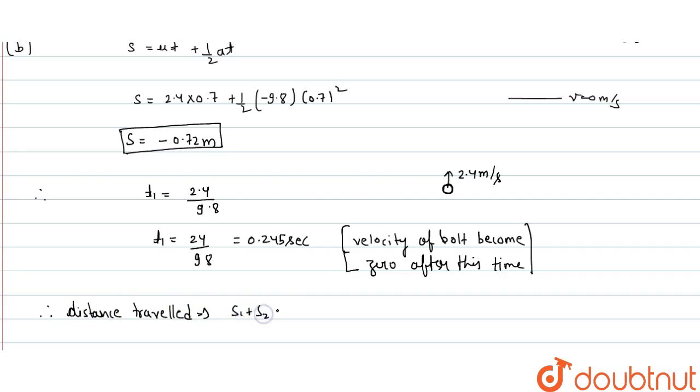S equals s1 plus s2. Explain s1 is maximum height until velocity becomes 0, that distance, that time.